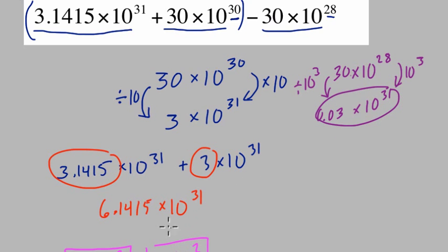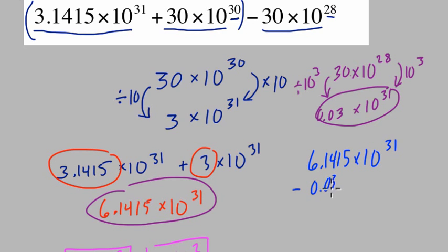Okay, so we're subtracting that from 6.1415 times 10 to the 31st. And I'll write it over here, so we can see it all together. 6.1415 times 10 to the 31st minus 0.03 times 10 to the 31st. And this works out nicely, right? We're subtracting in terms of 10 to the 31st, so that stays there.